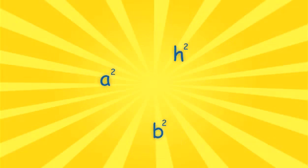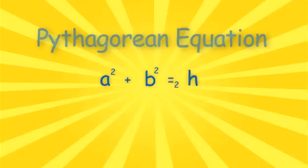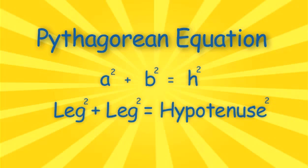And with this, we can see the Pythagorean equation, A squared plus B squared equals H squared. Or, in other words, leg squared plus leg squared equals hypotenuse squared.